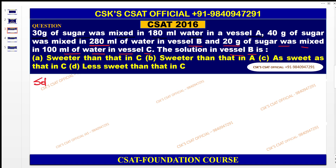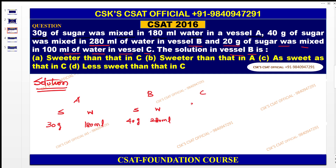Let us solve this. Take sugar and water — be careful with the unit, that plays a very vital role. Vessel A: 30 grams sugar, 180 ml water. Vessel B: 40 grams, 280 ml. Vessel C: 20 grams, 100 ml. Now we have to convert — the conversion plays a vital role. How many grams per ml of sugar is there? For vessel A: 30 by 180, cancel, which is equal to 1/6 gram per ml of sugar.